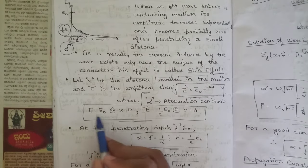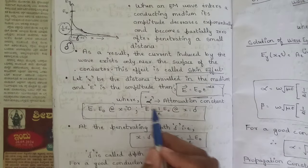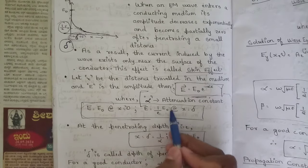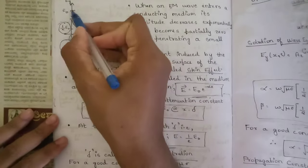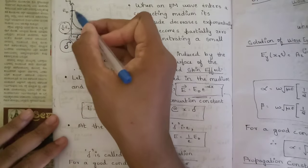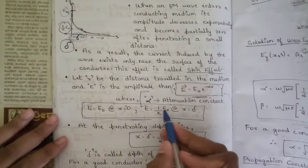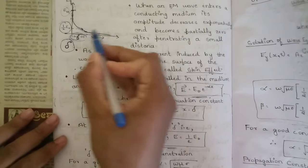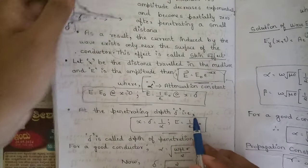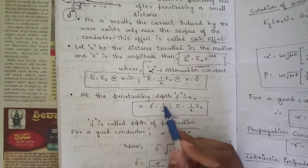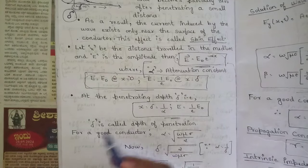At x = 0 (free space), E = E₀. At x = δ (depth of penetration), E = (1/e) · E₀. From this, we derive that at penetrating depth δ: δ = 1/α, and E = (1/e) · E₀.